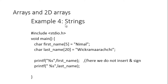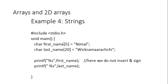A string is an array of characters. For example, 'Nimal' is an array of five characters stored in a char array of size five. We can print string values using the %s format specifier in printf.